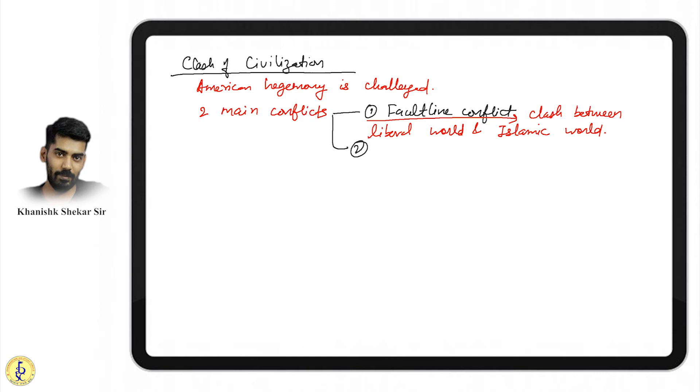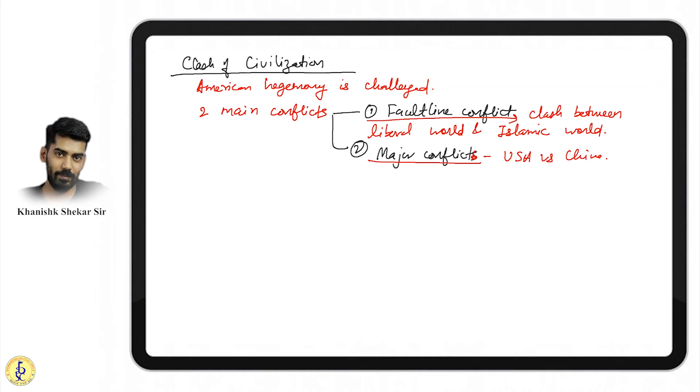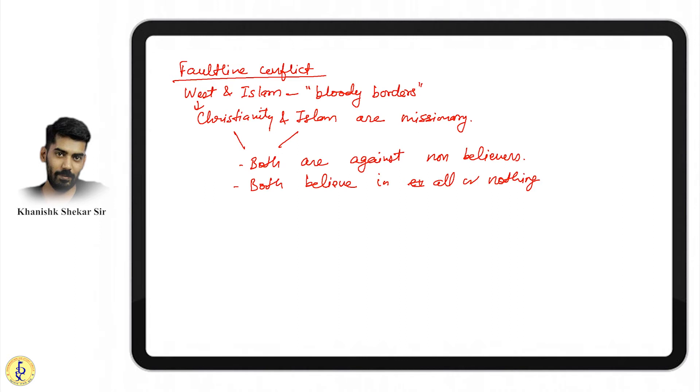The fault line conflict is between the liberal world and Islamic world. There are other major conflicts like USA versus China—the American president openly saying Chinese virus. Let's understand fault line conflict. He says West and Islam share bloody borders marred with blood. Christianity in the West and Islam are both missionary.